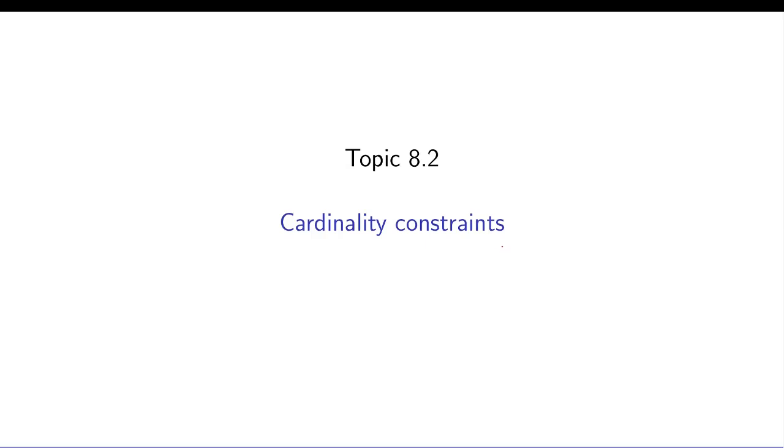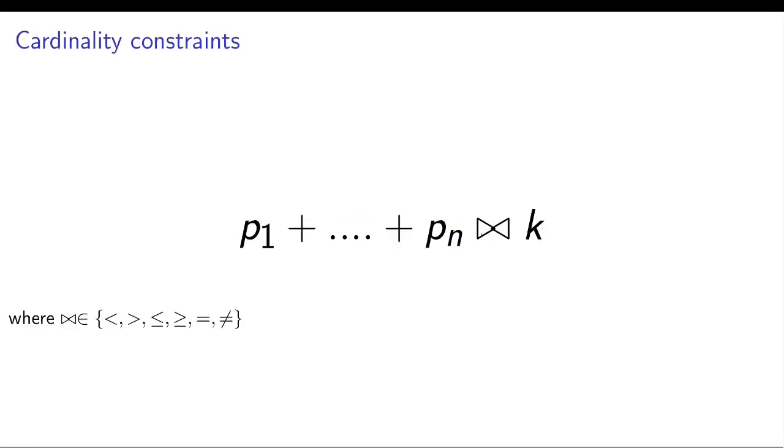Now we will discuss the cardinality constraints and how to encode them as a SAT problem. So what are cardinality constraints? Let's suppose you have n bits p1 to pn and sum of these bits is less than or equal to k, or greater than or equal to k, or equal to k, all sorts of relations you can imagine.